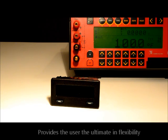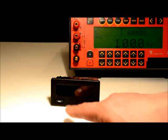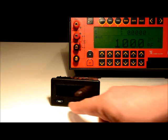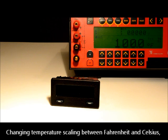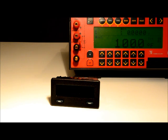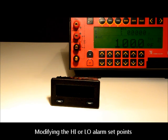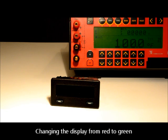The Superlight W Series meter provides the user the ultimate in flexibility. Changes can be easily made to the program using the two buttons on the front panel. User adjustable settings include changing the temperature scaling between Fahrenheit and Celsius, modifying the high or low alarm set points, and changing the display from red to green.